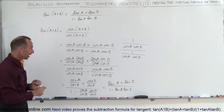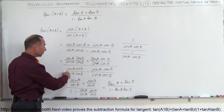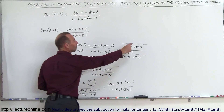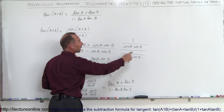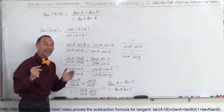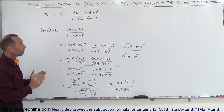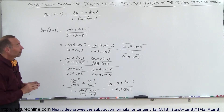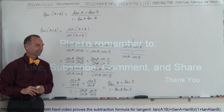Just that one little insight: realizing we have to somehow make this into a 1. The trick is to divide both the numerator and the denominator by cosine A cosine B, and we have what we're looking for. That's how we prove the addition formula for the tangent. Thank you.